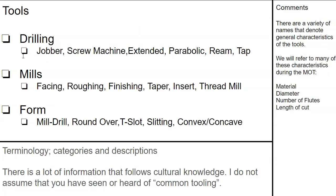Now let's talk about tools. For drilling, there are Jobber length, Screw Machine, Extended, Parabolic, Ream, and Tap. The jargon of machining has subcategories and subcategories. For mills: facing, roughing, finishing, taper, insert, thread mills, form tools, mill drills, roundovers, T-slots, slitting saws, convex and concave cutters. If we need to make the geometry, there's probably a tool to do it. Do not assume you've seen or heard of all common tooling — really, there is no common tooling. Go to MSC Direct or McMaster and you'll see thousands of pages of tools.